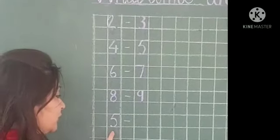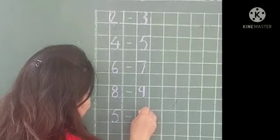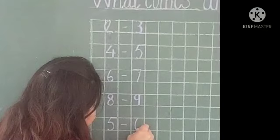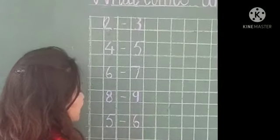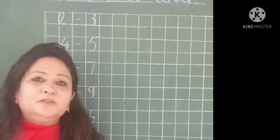And children, which number is this? This is number 5. And what comes after 5? So here we will write number 6. Because number 6 comes after number 5.